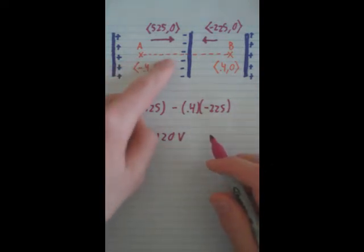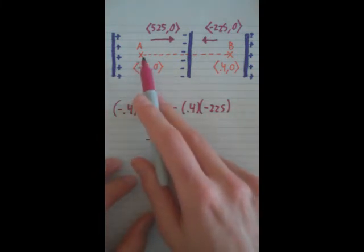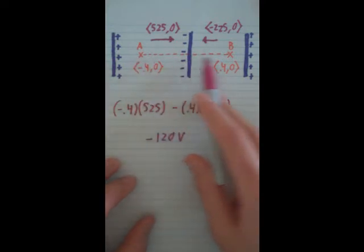So that's how you figure it out from here to here and here to here. Now, the question would be, if I had a proton and it went from A to B, what would be its kinetic energy when it reaches B?